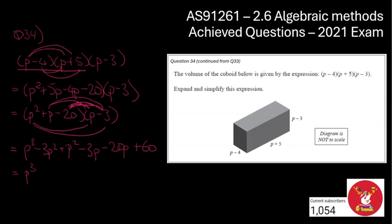So p cubed stays the same. We've got some p squareds here. That's going to become minus 2p squared. We've got the p's over here. That's minus 23p. And then finally, plus 60.